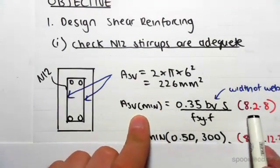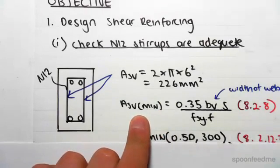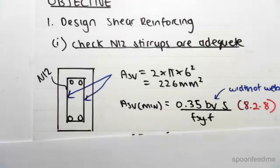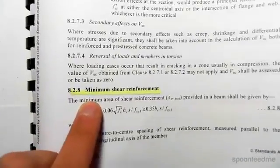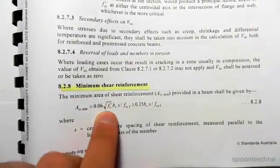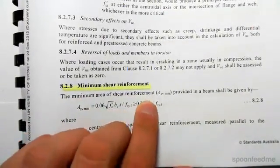Now the code in section 8.2.8 has a minimum area requirement. So if I show you that, 8.2.8, we have the minimum shear reinforcement Asv min equals this which has to be greater than that. So all we need to do is just find that value there, ensure that our steel is greater.